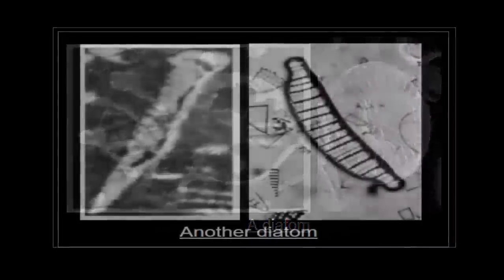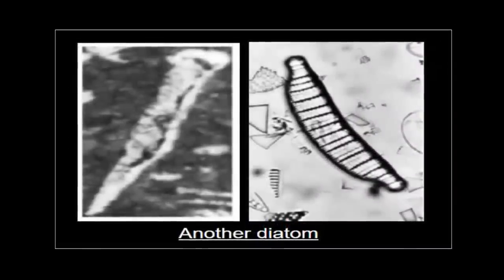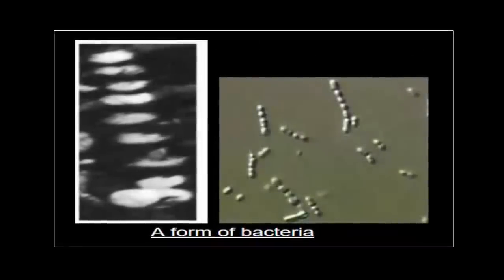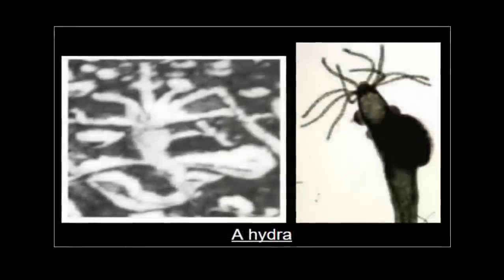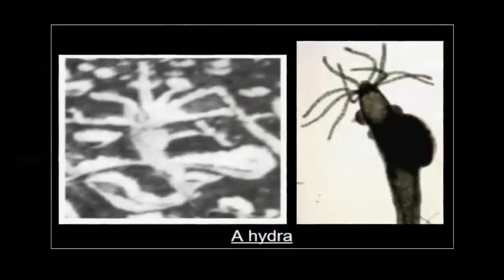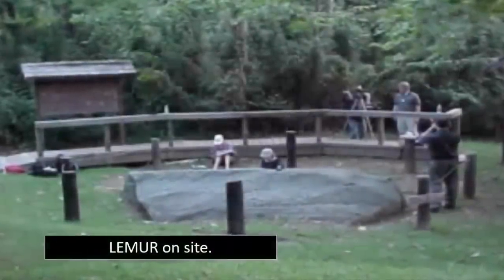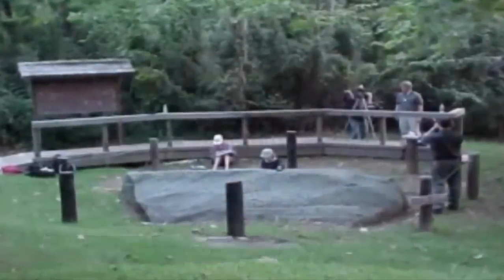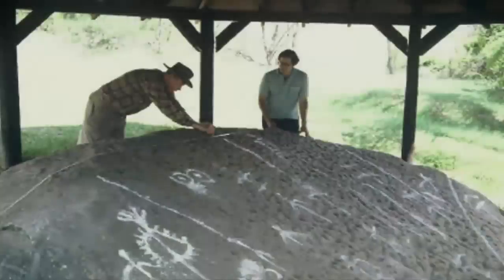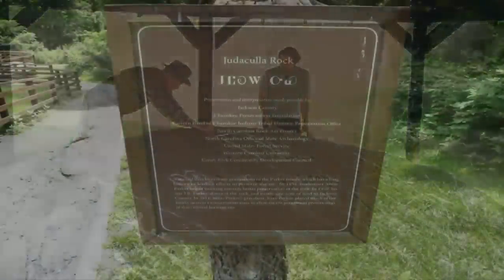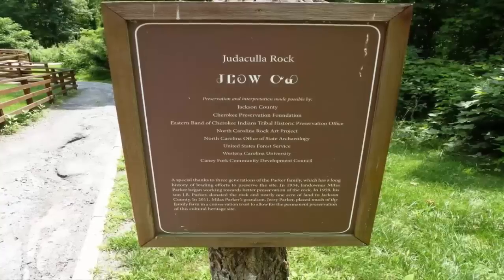Modern academia states that man first saw microscopic creatures in September 1674. These observations were made by Dutch scientist Anton van Leeuwenhoek. That means humans have only known of microscopic life for less than 330 years. If this is true, who or what could have created the Judacula stone's markings over 3000 years ago?